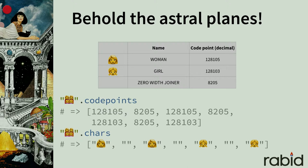Unicode partitions the available code point numbers into chunks called planes. Most of the characters we use for day-to-day communication are on the basic multilingual plane. The other chunks, the higher planes, are collectively referred to as the astral planes. Emoji live on the astral planes. Here we see an example of one of the many Unicode family emoji, and we see it's built with no less than seven code points. The family group is actually made up of the code points for each individual face, combined with the zero-width joiner code point. Many Unicode characters do not have a visual or spatial representation — Unicode also has things for controlling writing direction and the different kinds of spacing between letters and words.